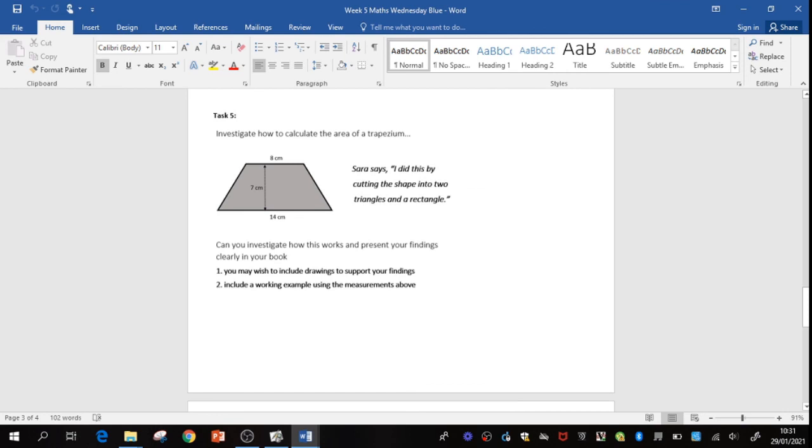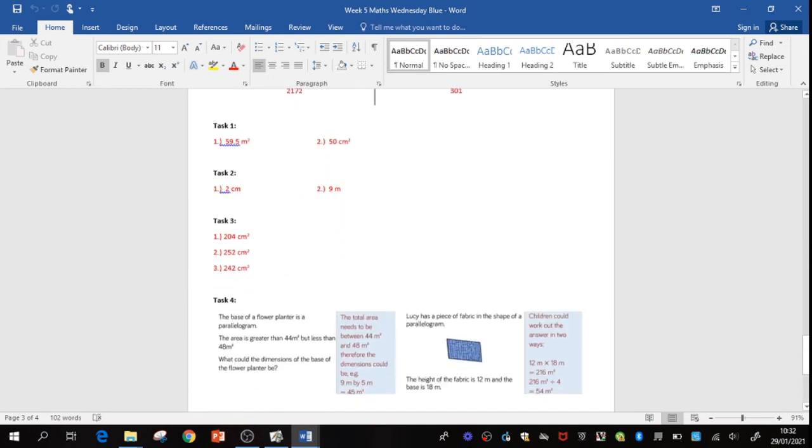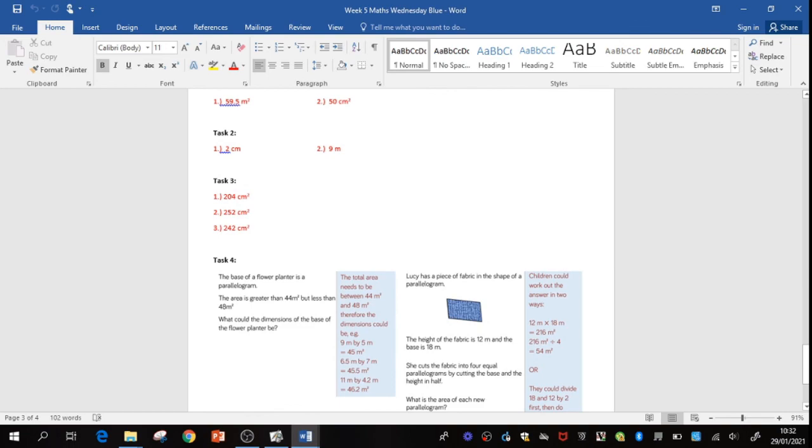Your extension here, task 5, I want you to investigate how to calculate the area of a trapezium. Anyone in green group who has flown through this, then please feel free to do this as well. I've left it on the board, so you can read it yourself. I know it's not on your sheet, but feel free to investigate how it works and present your findings. You may wish to include drawings to support you. Use some paper, cut some things out. That might help, just as you did at the start, if you were doing that along with me. And include a working example with measurements. Just like I have here, see if you can tell me the area of a trapezium. And as per normal, I'm sure you've already seen, all of your answers are underneath.